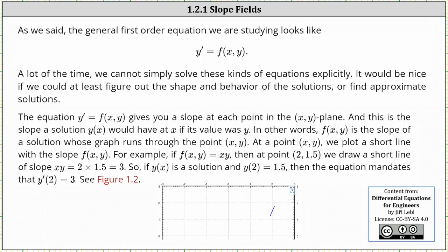For example, if f of x comma y equals x times y, meaning y prime equals x times y, then at the point 2 comma 1.5 — which would be this red point here on the coordinate plane — we draw a short line segment of slope x times y, which is 2 times 1.5, which is equal to 3. This short blue line segment has a slope of 3. So if y of x is a solution and y of 2 equals 1.5, meaning the solution passes through the point 2 comma 1.5, then the equation mandates that y prime of 2 must equal 3.